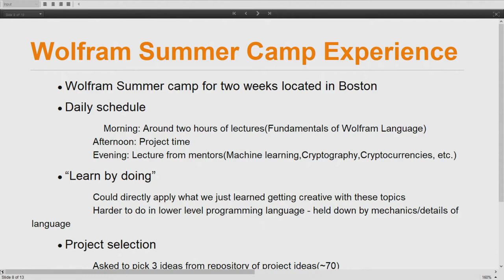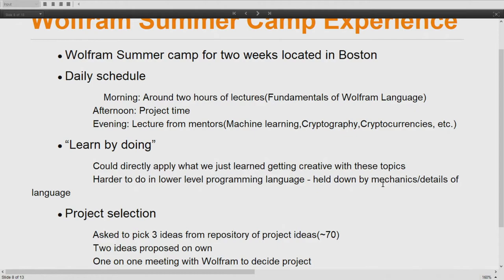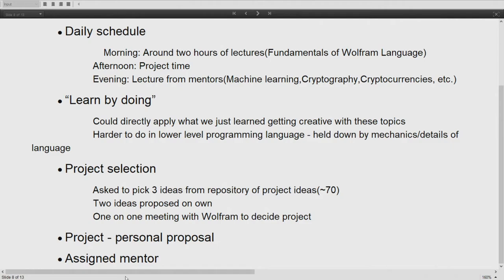Wolfram summer camp was located in Boston and ran for two weeks. The daily schedule was: in the morning, around two hours of lectures focusing on the Wolfram language itself; in the afternoons, a lot of project time; and in the evenings, lectures from mentors and guest speakers on topics such as machine learning, cryptography, cryptocurrency, and more. I liked the concept of learning by doing — you could directly apply what you just learned and get creative, which would have been harder in a lower-level programming language. For project selection, we were given a repository of around 70 ideas and asked to pick about three and propose two of our own. We then had a one-on-one meeting with Stephen Wolfram to decide which project we'd work on for the next two weeks. We were also assigned a mentor who was an expert in our project's field.